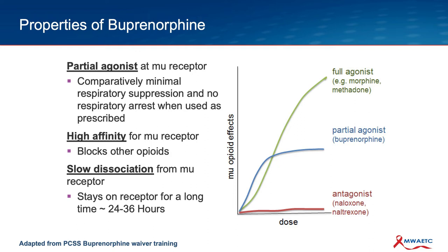These unique pharmacologic properties of buprenorphine are part of what makes it such a good medicine in the treatment of opioid use disorder. It's a partial agonist, so you're not sedated from its use, but at the same time it suppresses withdrawal. It has a high affinity, so it can block some of the reinforcing effects of other opioids if a patient were to lapse when taken at therapeutic doses, and it has a slow dissociation from the receptor, so you don't have to redose continually — it has a long duration of action.